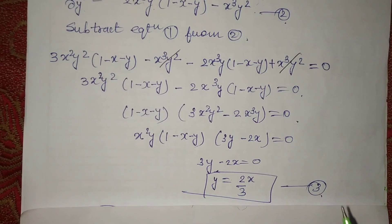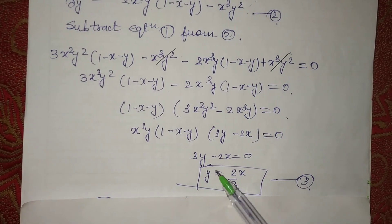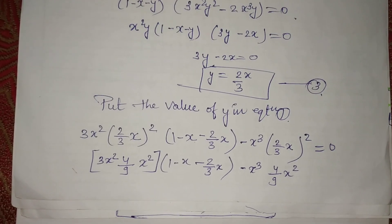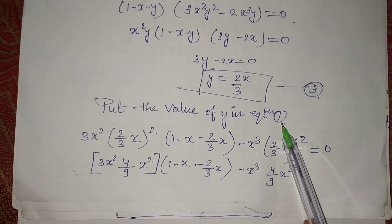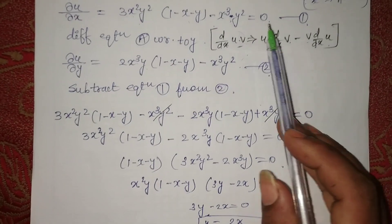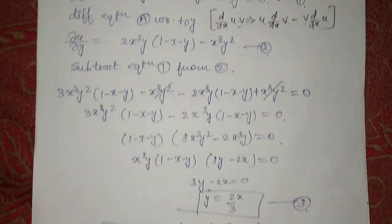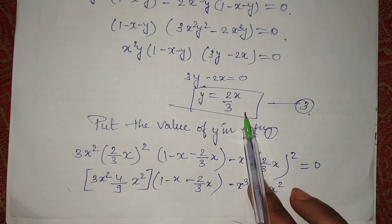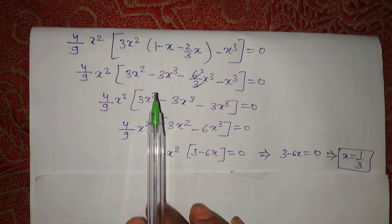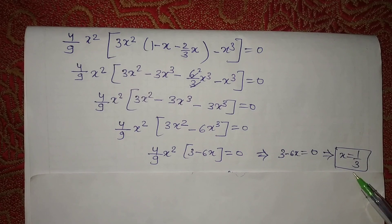We don't know x and y values yet, so let's put this value of y into any equation — equation first or second. In equation first, we substitute y = 2/(3x) and solve this equation. The value of x we get is 1/3. You will get plus and minus when you solve it fully.